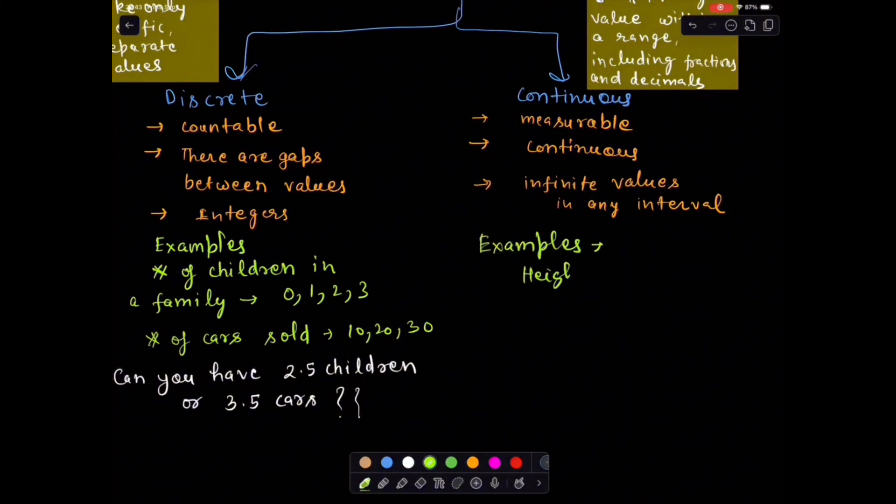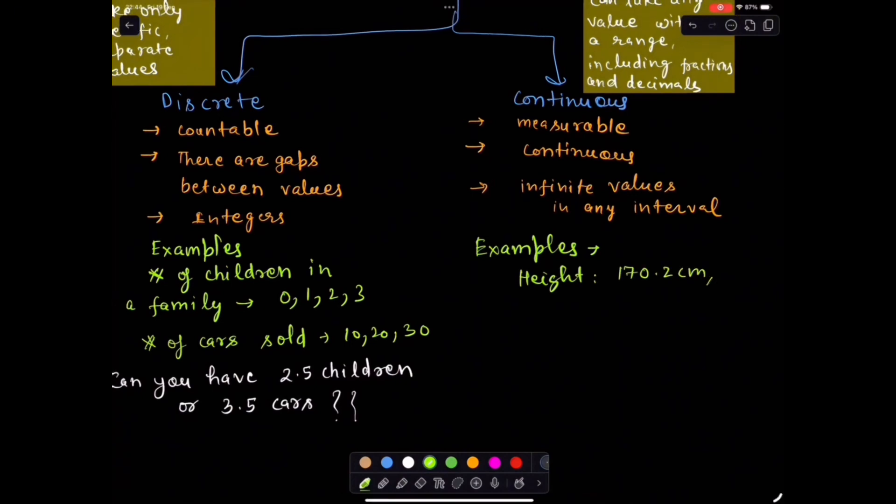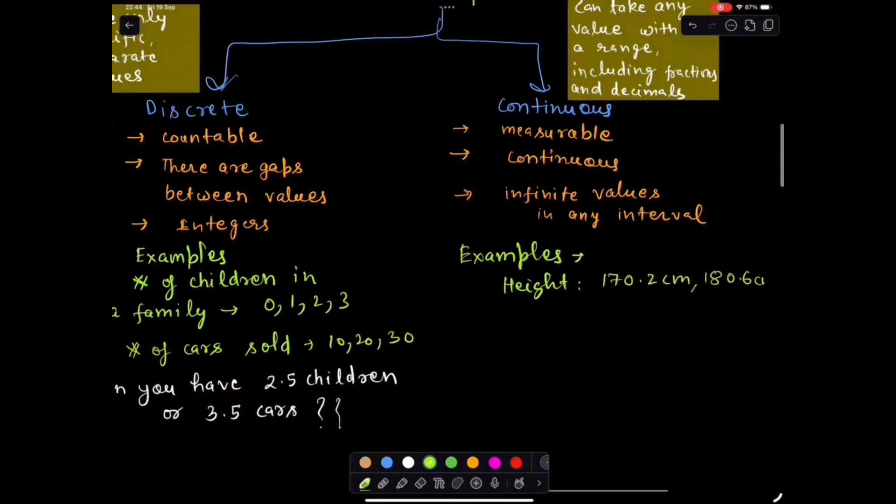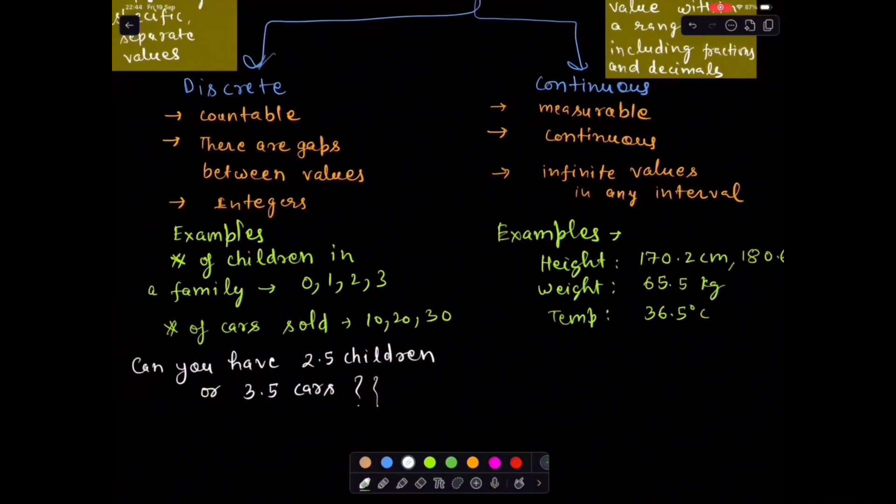On the other hand, continuous variables can take any value within a range, including fractions and decimals. Example: height, weight, income, and temperature. You can have 170.2 cm height or 35,456.75 income. Because the values exist on a continuum.